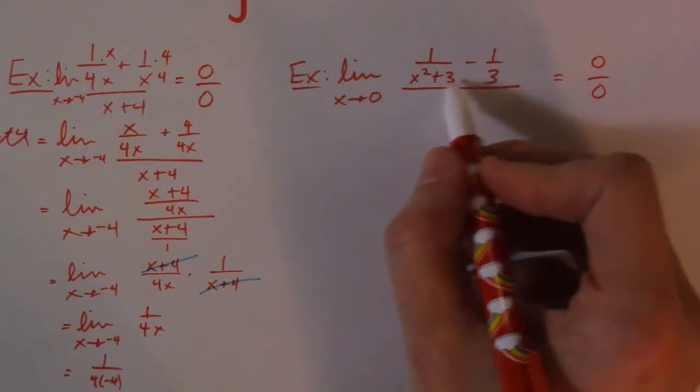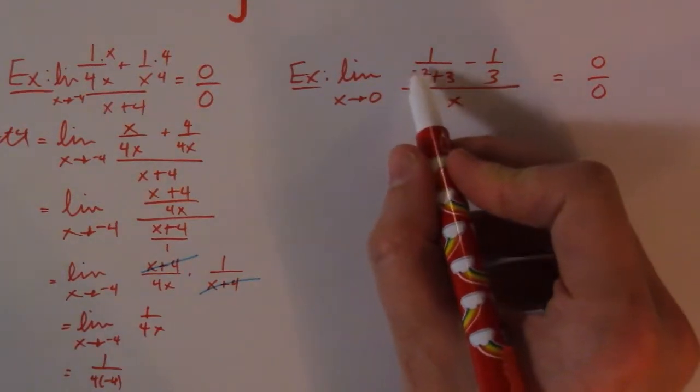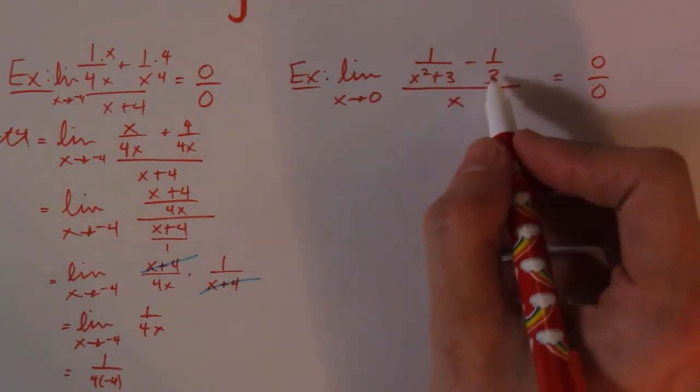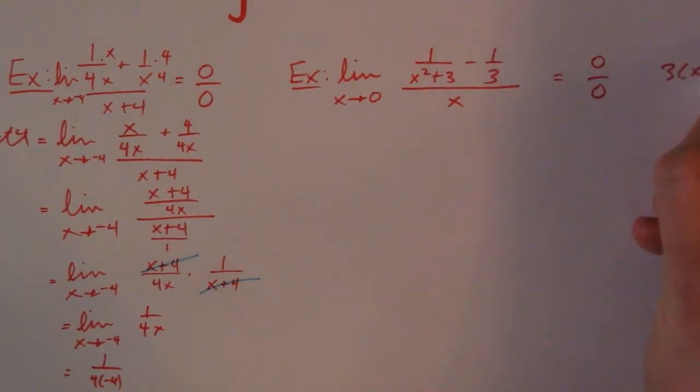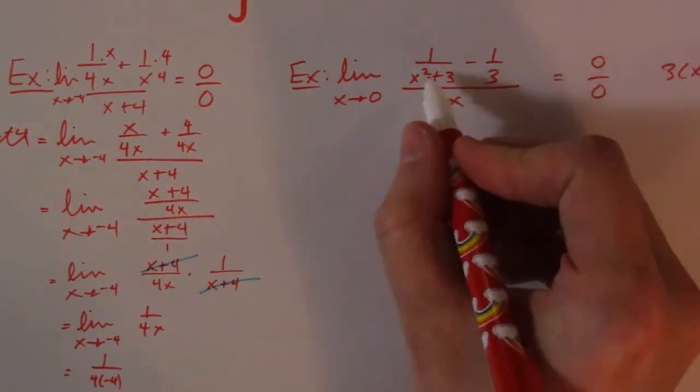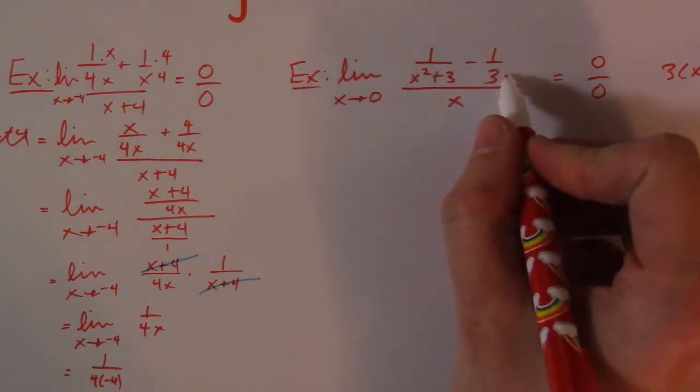So the common denominator for this - this doesn't factor. Sometimes you might have a factor, but it does not. So the common denominator is going to be 3(x² + 3).